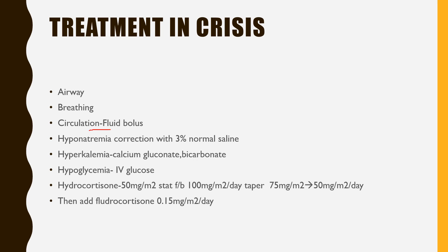For shock, correct with fluid boluses without overloading the child. Hyponatremia is corrected with 3% normal saline, then continue maintenance with an appropriate hyponatremic correction solution based on sodium levels. For hyperkalemia, connect ECG monitors, give calcium gluconate to stabilize cardiac membranes and prevent arrhythmia, then give bicarbonate. For hypoglycemia, give 2 ml/kg of 10% glucose and maintain a glucose infusion rate of at least 6 to 8 mg/kg/min.